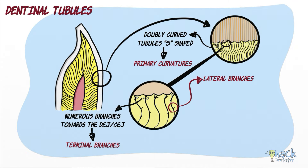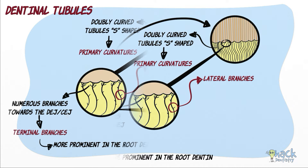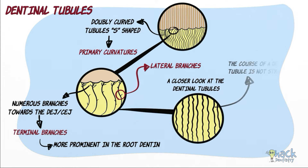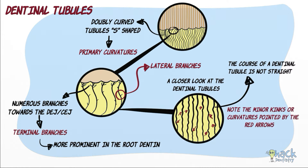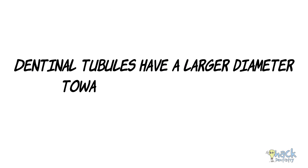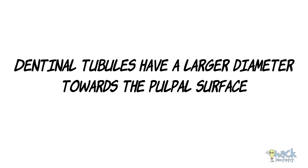Terminal branching of dentinal tubules is more prominent in the root dentine than in the coronal dentine. The course of a dentinal tubule is not straight — each tubule shows minute curvatures or minor kinks throughout its length, and these small minor kinks are called secondary curvatures. Dentinal tubules have a larger diameter towards the pulpal surface.